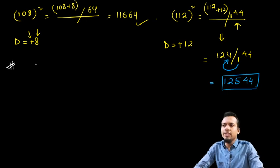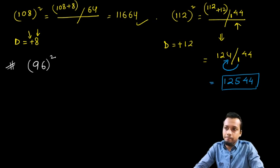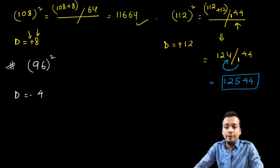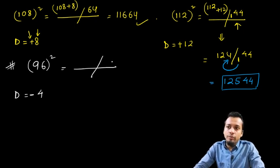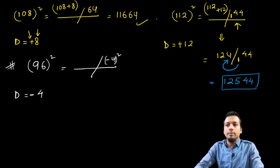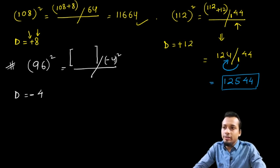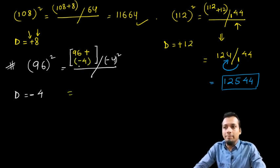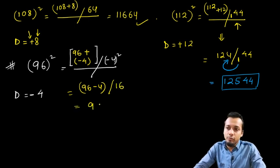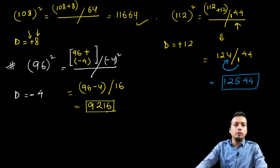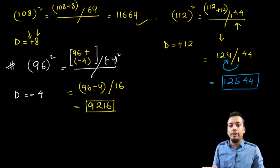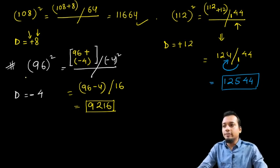Now let's take a number less than 100: 96 squared. The deviation is minus 4 because 96 is less than 100. The deviation square on the right side: minus 4 squared is 16 — the square is always positive regardless of sign. On the left side: 96 plus (minus 4) is 92. So the answer is 9216.